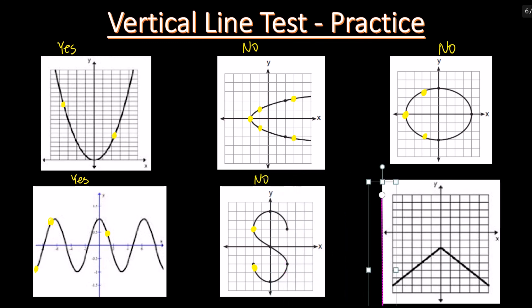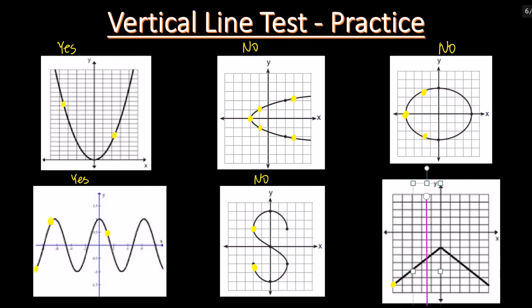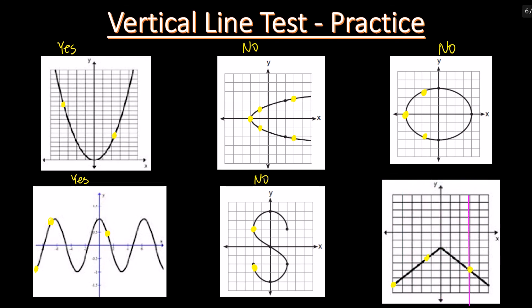Last question. Place the vertical line at the left side and move along the graph. There is only one intersection, so it's a function.